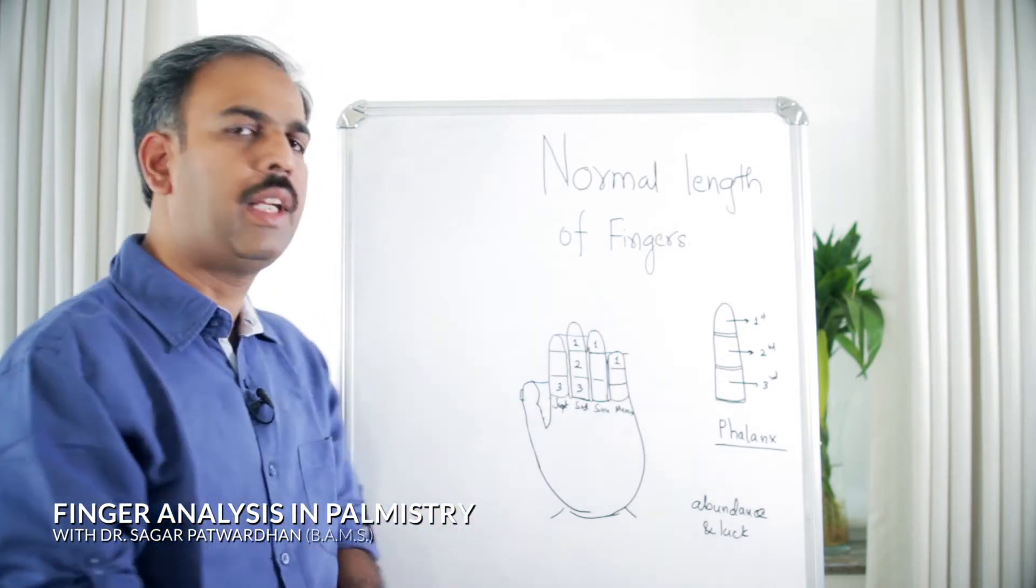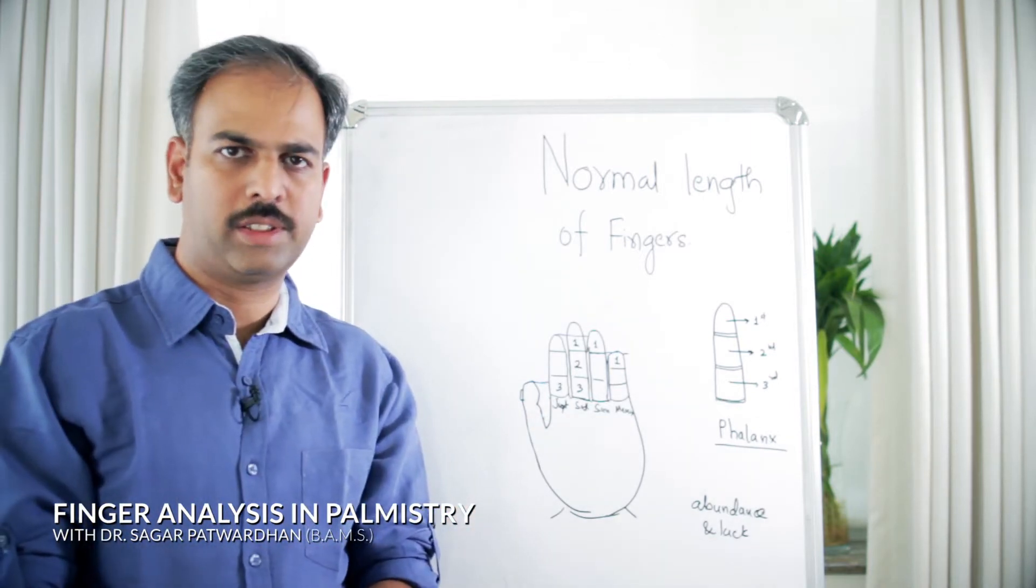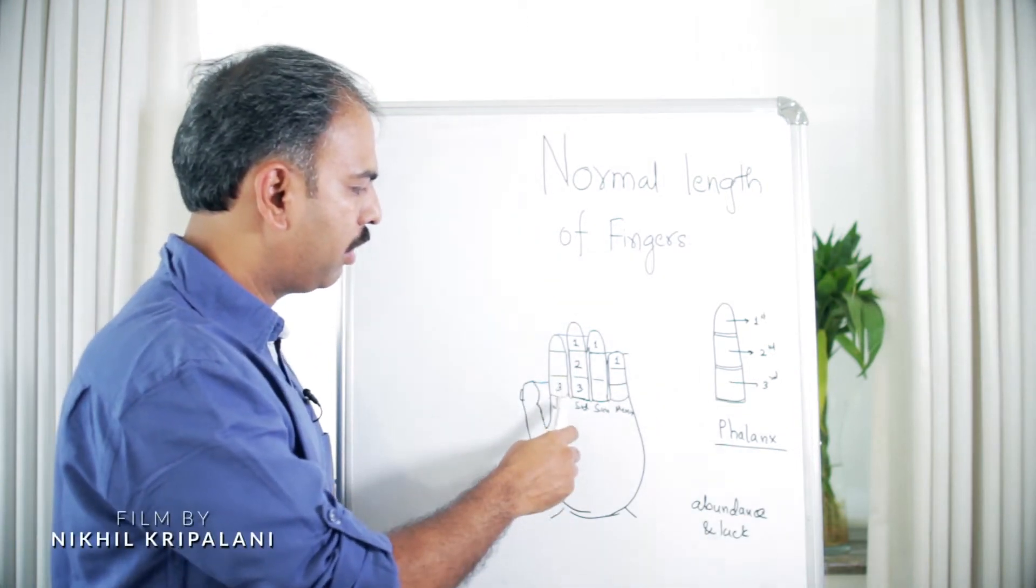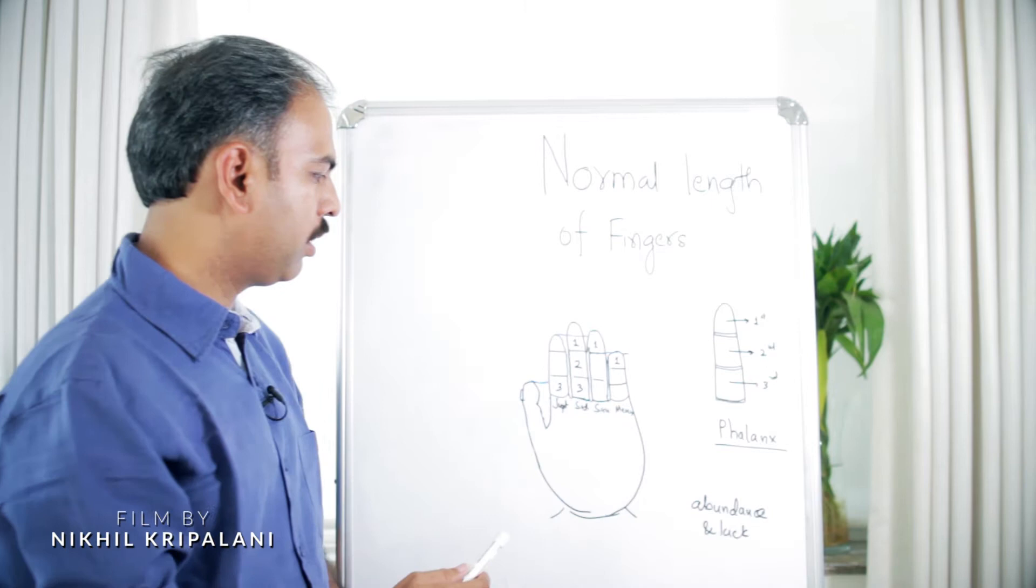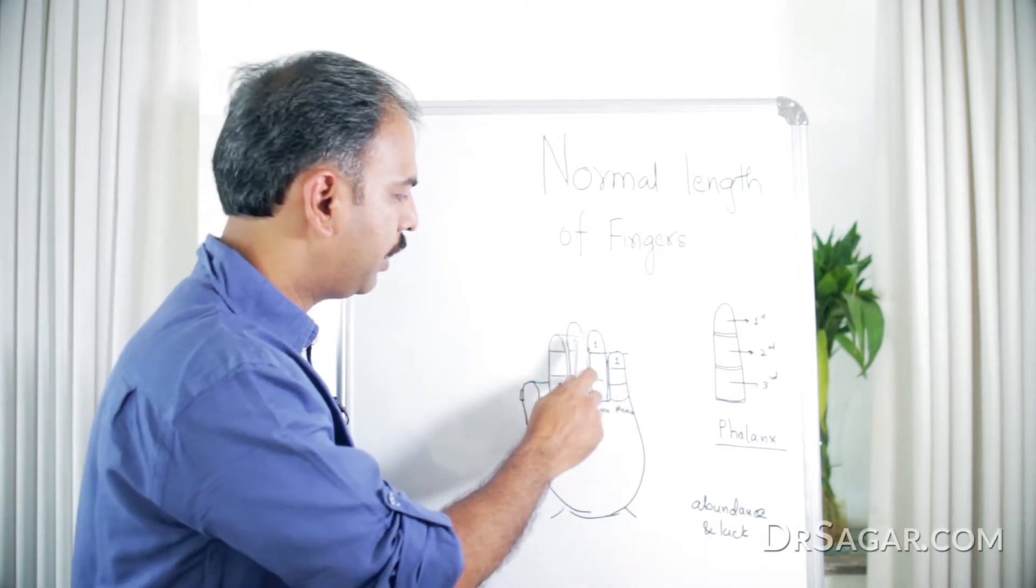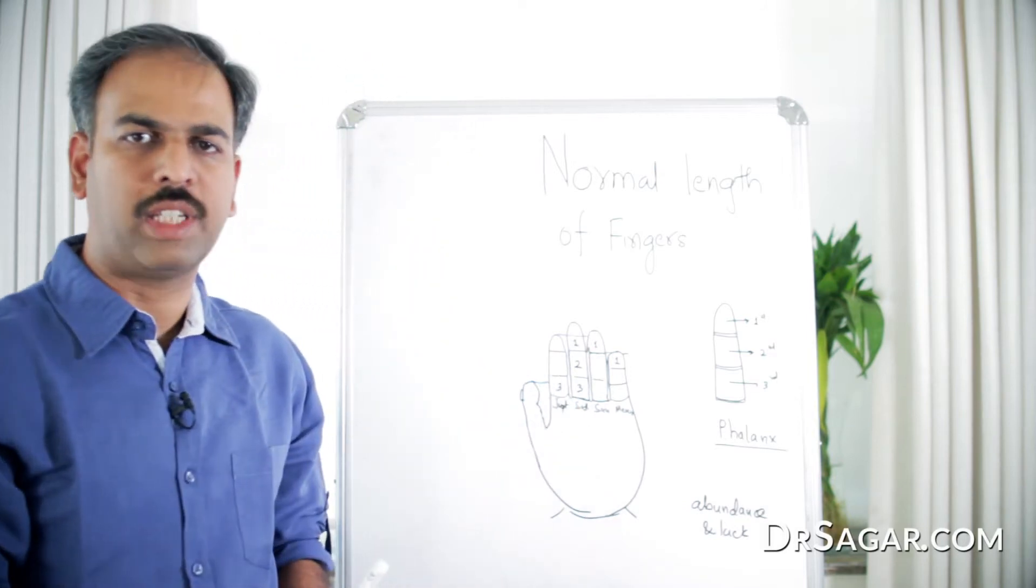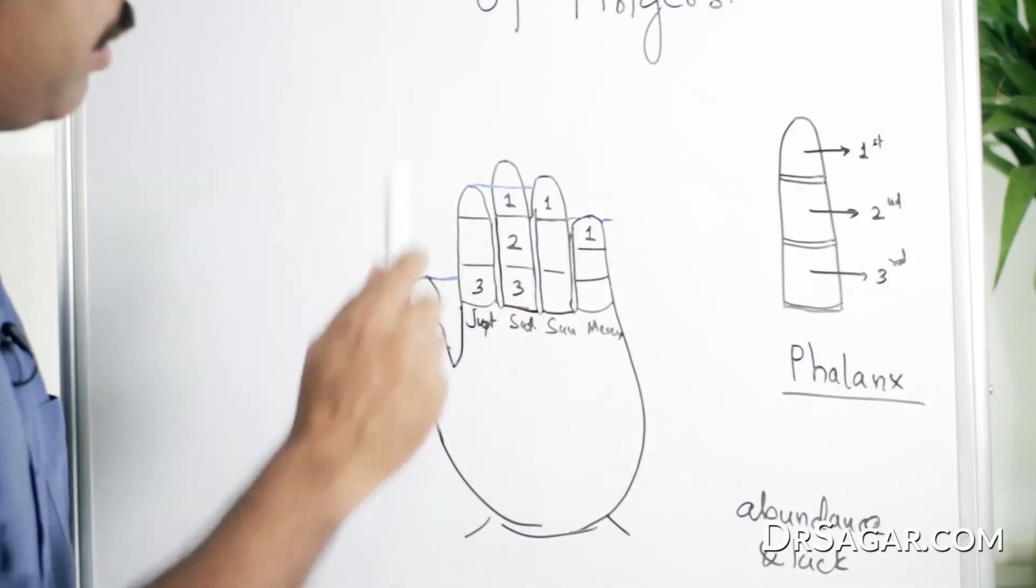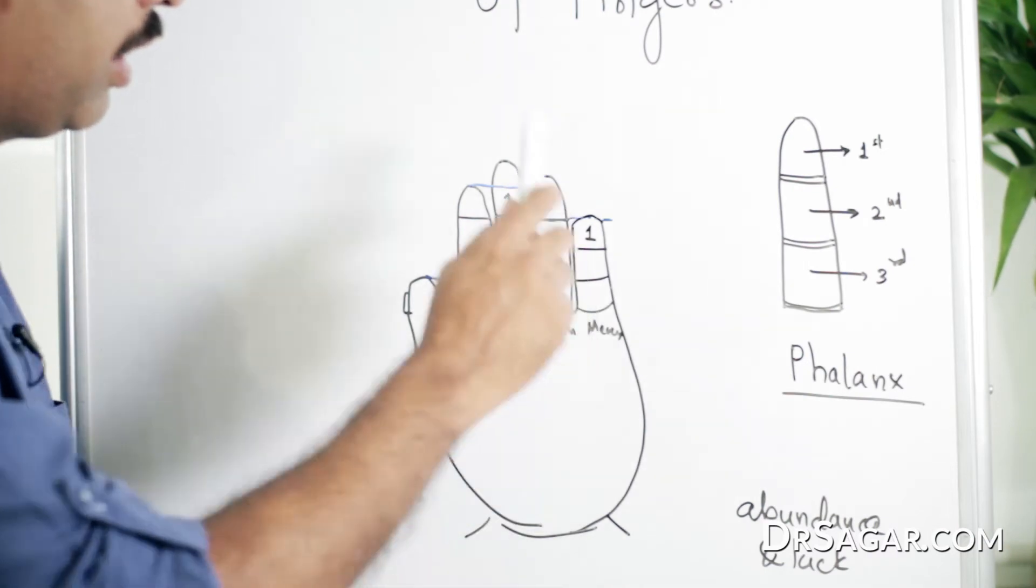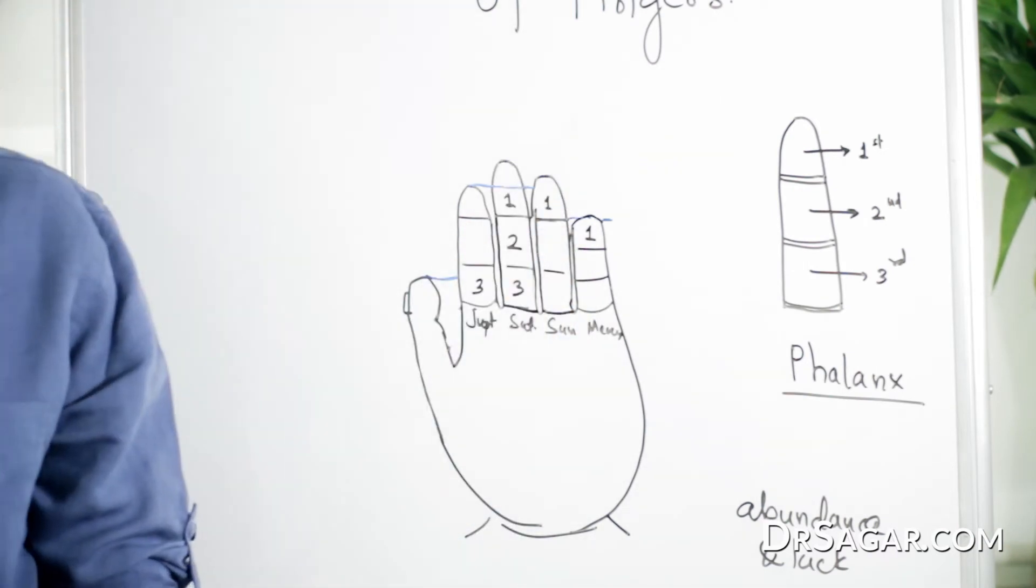The fingers are named after planets, like Jupiter. The finger related to Jupiter is called the first finger. The middle finger is related to Saturn, the ring finger is related to Sun, and Mercury is related to the little finger.